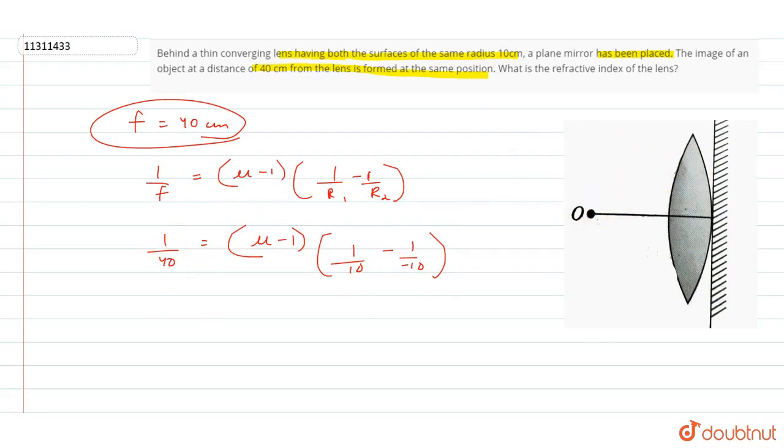When the rays go here, after the refraction from the lens, these rays should become parallel. Now if they are parallel, they will hit the plane mirror here, and then retrace back to this point.